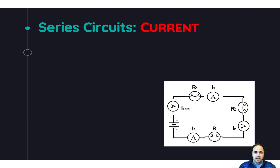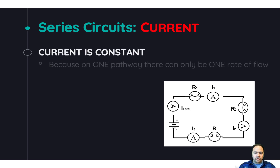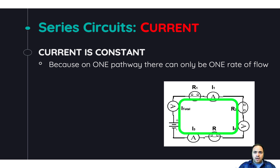In a series circuit, the current is constant everywhere in the circuit. Because there's only one pathway, there can only be one rate of flow. Electrons are going to flow by each second at any given point in this series circuit.